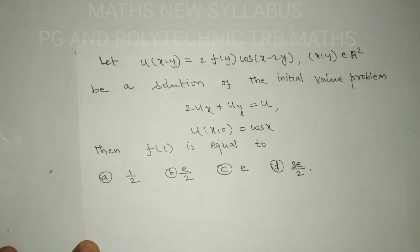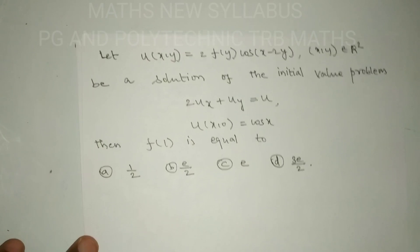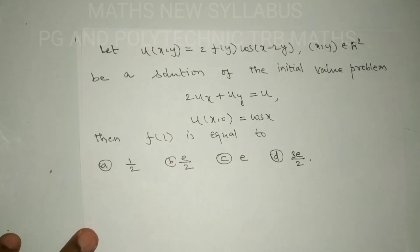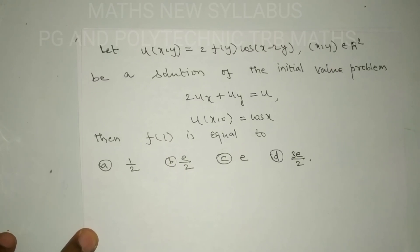Be a solution of the initial value problem: 2 times u_x plus u_y equal to u, with initial condition u(x, 0) equal to cos x. Then f(1) is equal to — option A: 1/2, option B: e/2, option C: e, option D: 3/2.